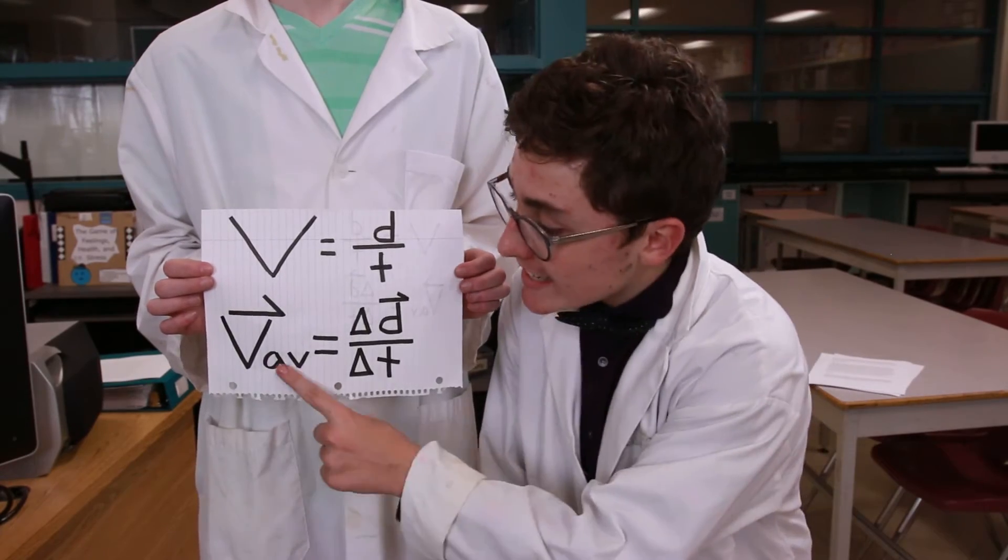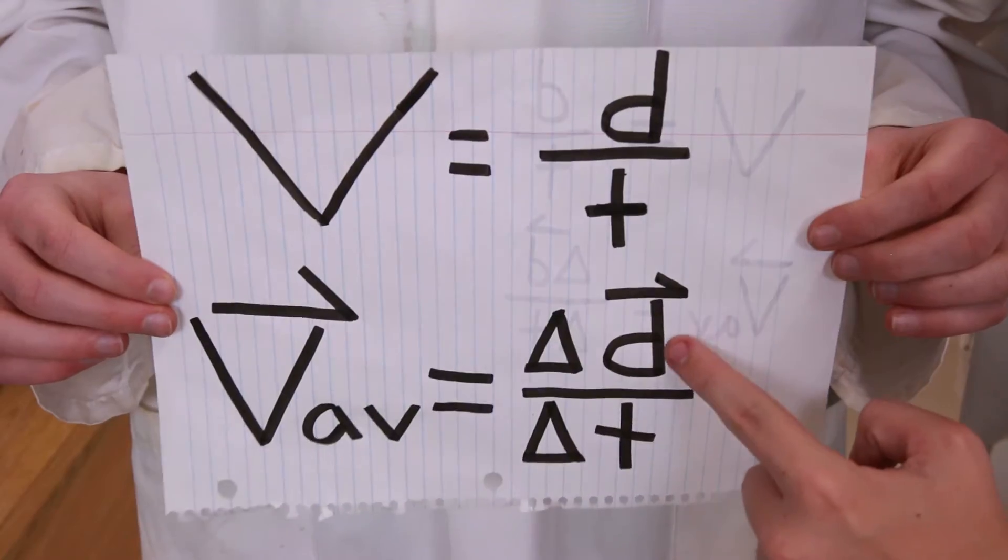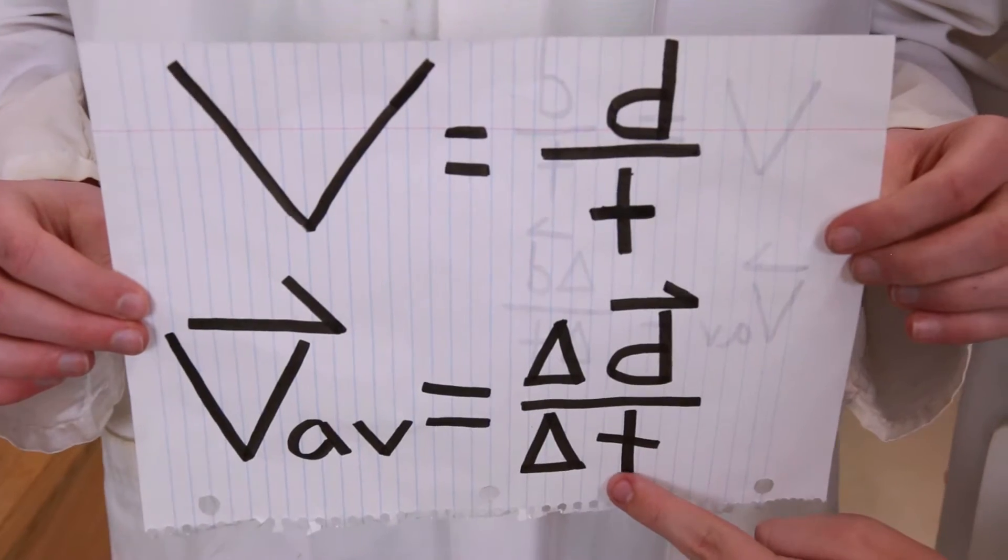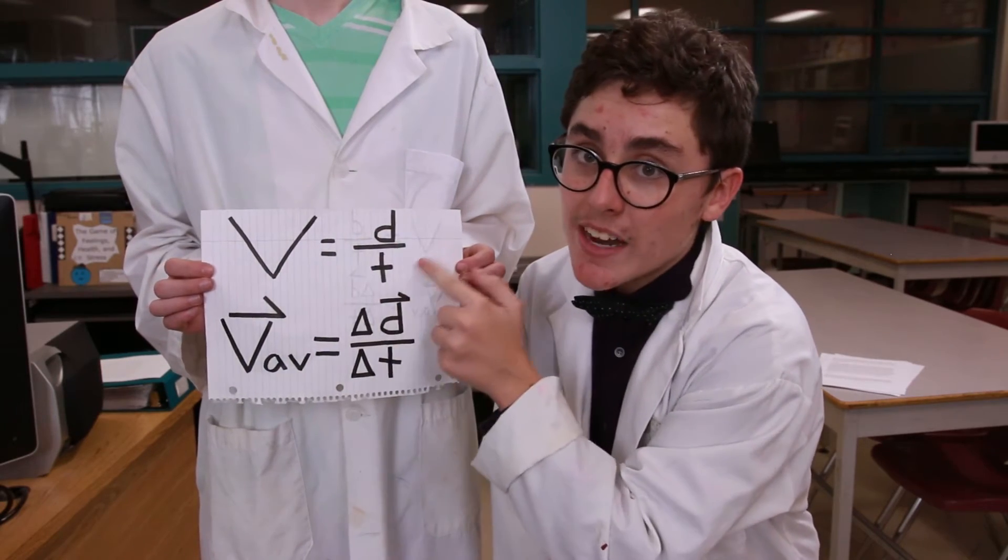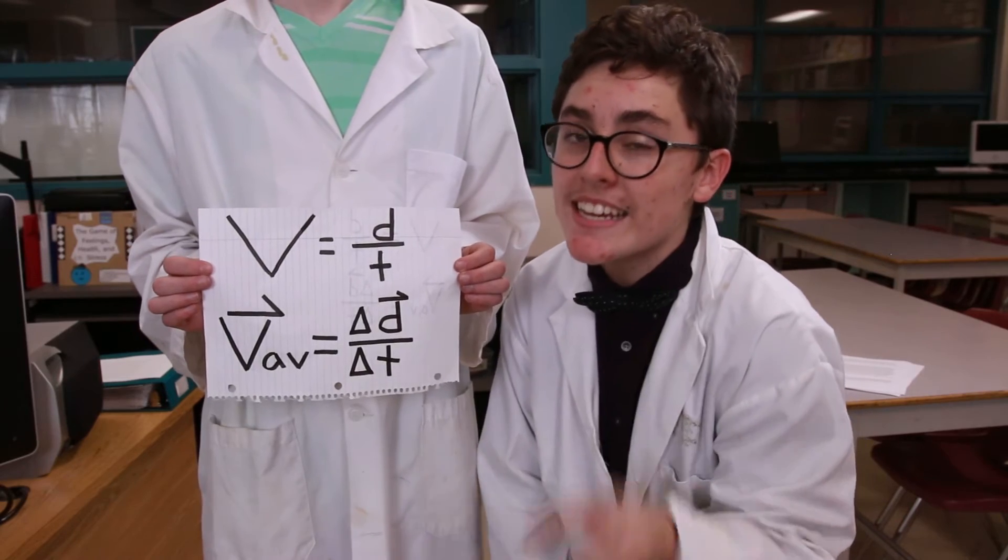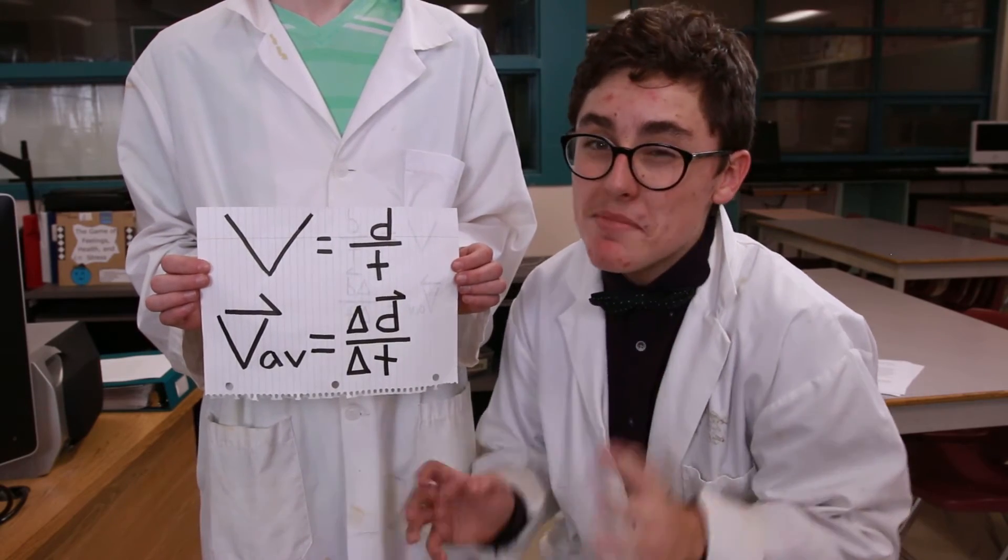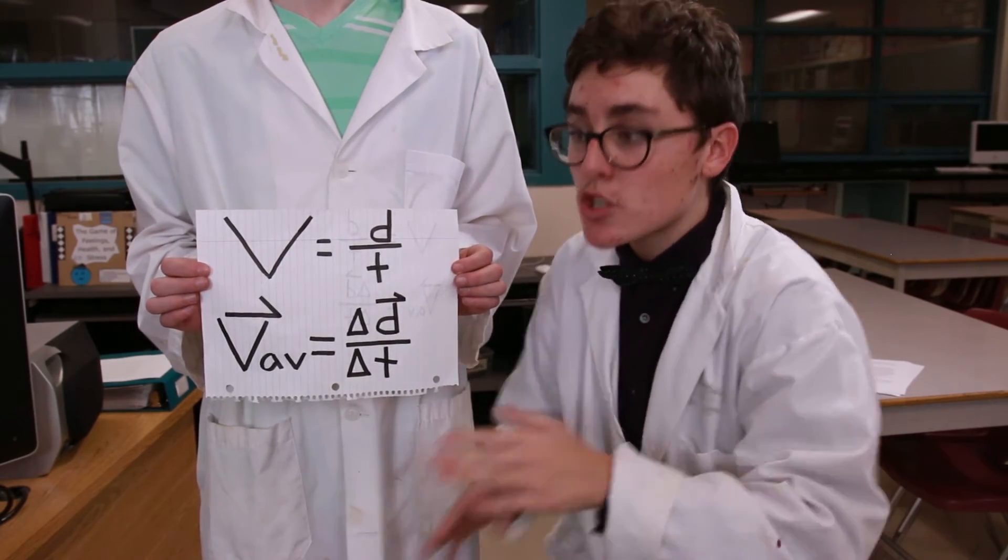If you want to calculate velocity, it's a simple equation of displacement divided by time. And similarly, with speed, it's distance divided by time. But keep in mind that speed and velocity are not the same thing, as velocity has direction.